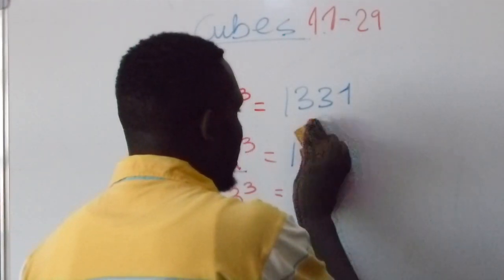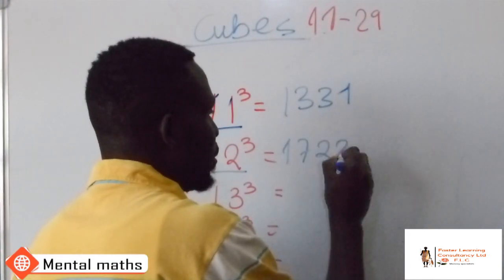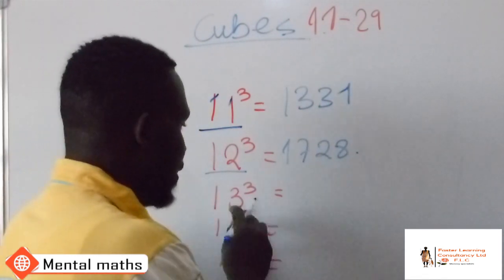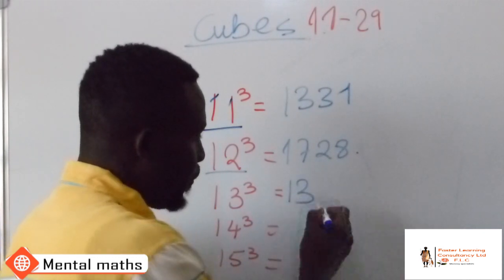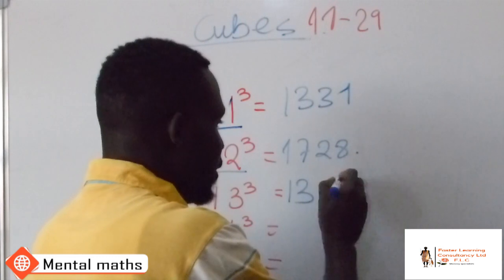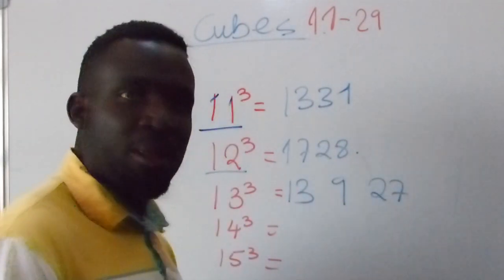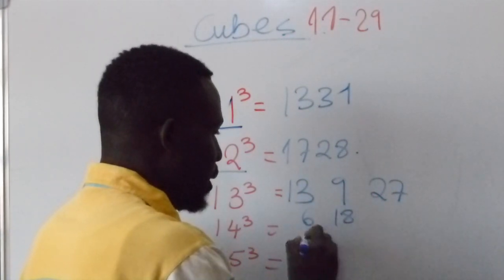Now the story, so here you have 1728. So the story doesn't end there. It's the same procedure. If you have 13 cubed, you just write 13. So here, and then square 3 will give you 9, and cube 3 will give you 27. Now the next thing you want to do is multiply this one by 2. So this is going to be 6, this is going to be 18.